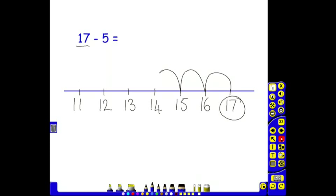One, two, three, four, five, taking them to their answer, which is 12. 17 take away 5 is 12. This is counting back.